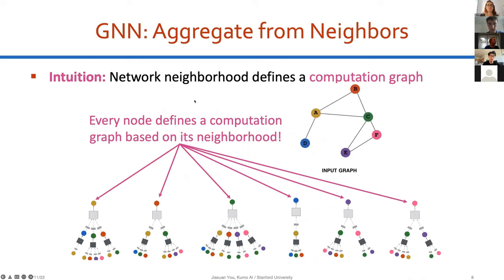We always aggregate from neighbors, and each neighborhood structure defines a unique computational graph. For example, with nodes A, B, C, D, and E in the input graph — because each node has a different neighborhood structure, when we unroll their computational graph, these computational graphs are also different. This is the core intuition of GNNs and why they work: different computational graphs lead to different node embeddings that can differentiate the nodes, which we then use for downstream applications.